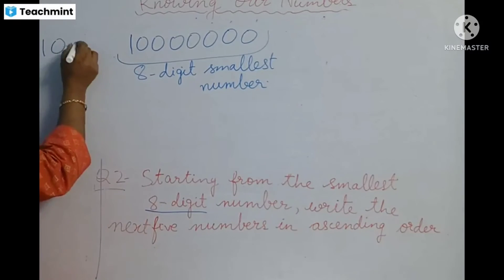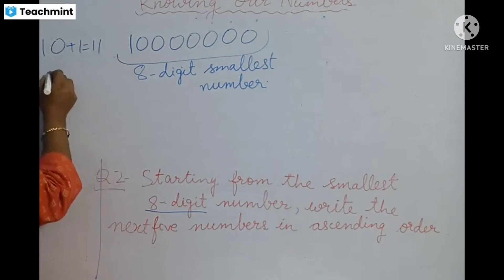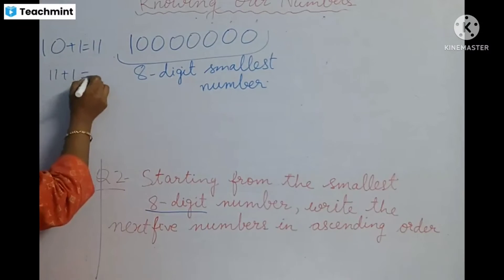Suppose you write about 8 digit: 11, 11 plus 1, 12, 12 plus 1, 13.